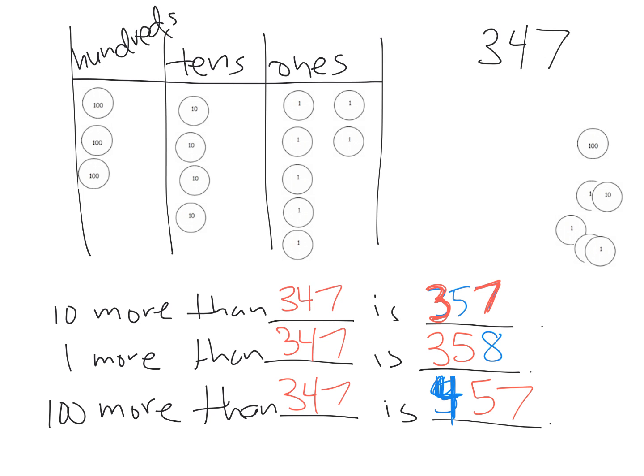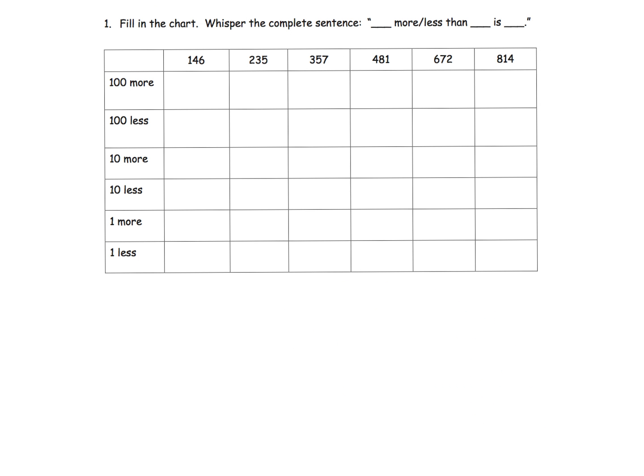And then lastly, a hundred more than 347 would become 447. What we want is we want to have students start to recognize the place being identified, and that is the number that gets changed. The four becomes a five, the seven becomes an eight, the three becomes a four, based on what place value we're talking about. That's the abstract. That's the goal. We're going to start with actual place value disks, we might use just pictures of place value disks, but eventually we want students to get to this abstract number sense technique.